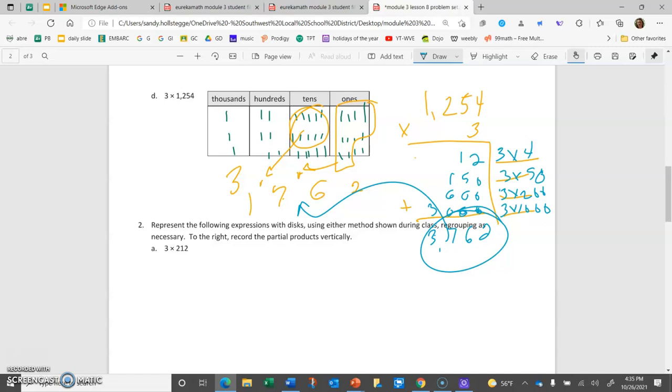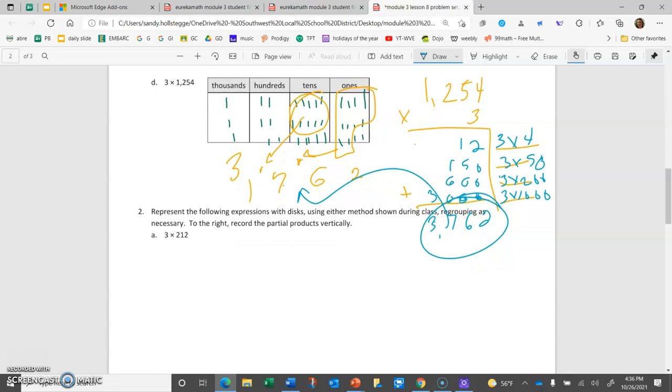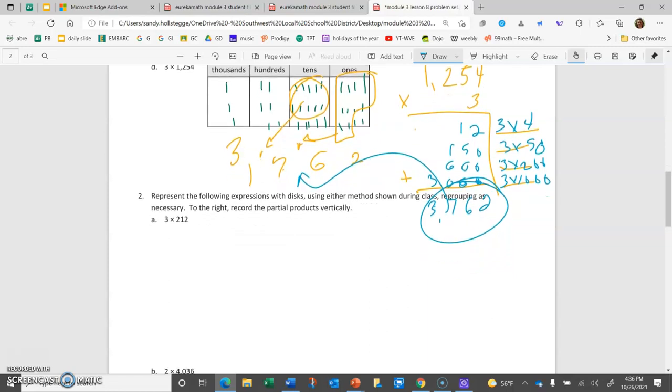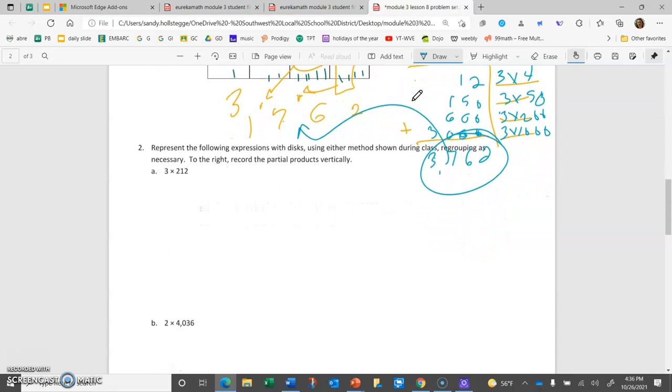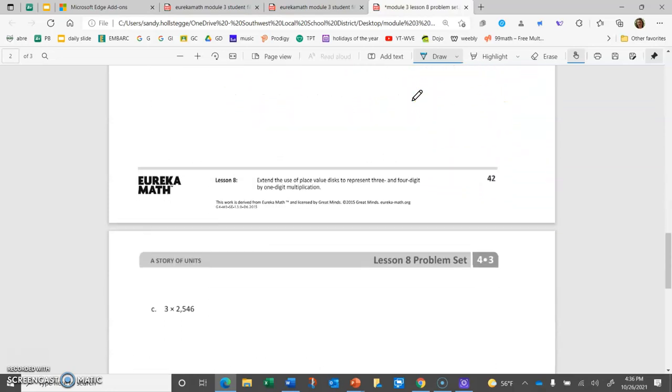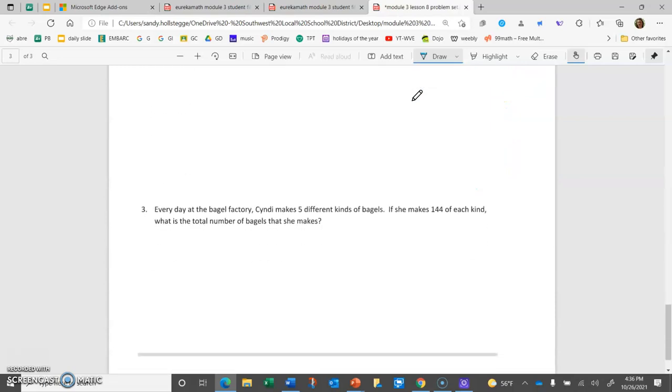So when you go to number 2, you are going to either use the place value discs if you choose, or you can use partial products. It says to do both, but I'm confident that you could go ahead and just go straight to partial products if you choose. And you're going to try 2A, B, C, and D.